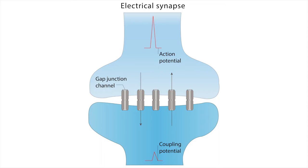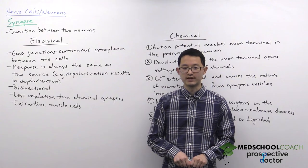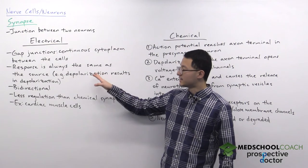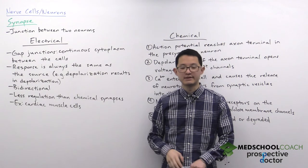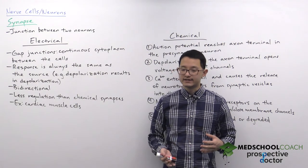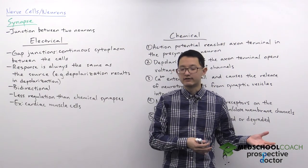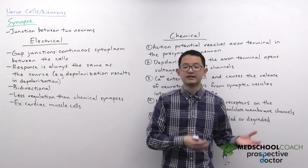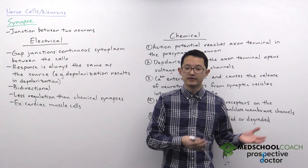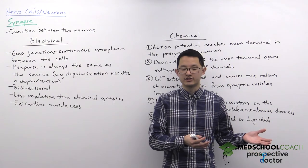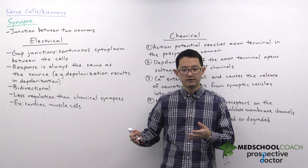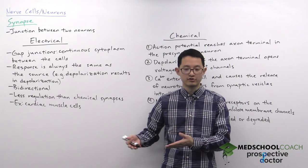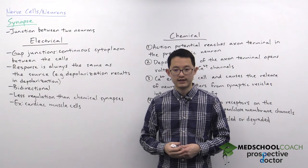There are several important consequences of having a continuous cytoplasm. The first is that the response is always the same as the source. This means if one cell experiences a depolarization, then those positive charges will simply move from that cell to the other cell, also resulting in depolarization.